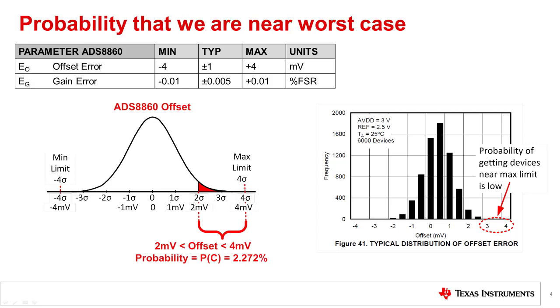From a statistical perspective, how likely is it that we find a device at the maximum limit? For this example, what is the probability that we get a device at exactly four millivolts? Since probability is equal to the area under the curve and the area under a single point is zero, technically the probability is zero. This isn't very helpful, so let's consider the probability that we are near the maximum limit. In this example, the probability that we are between two millivolts and four millivolts is 2.272%. This makes sense when you look at the measured histogram as you really can't see any bins in this region.